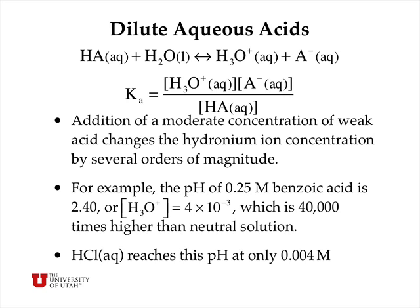We've already seen how dilute aqueous acid systems can be solved to find the hydronium ion concentration. For example, the pH of quarter molar benzoic acid is 2.4, or a hydronium ion concentration of 4 times 10 to the minus 3, which is about 40,000 times higher than a neutral pH-7 solution.